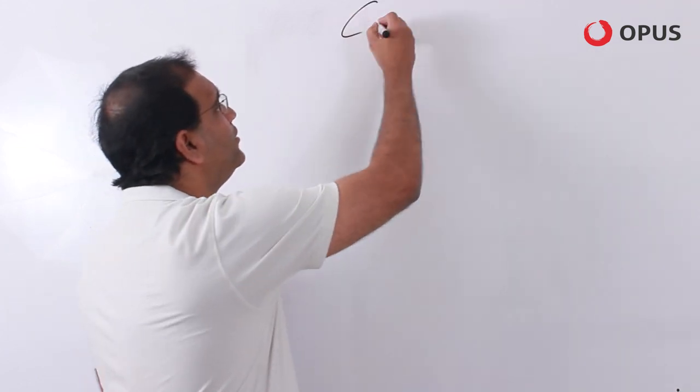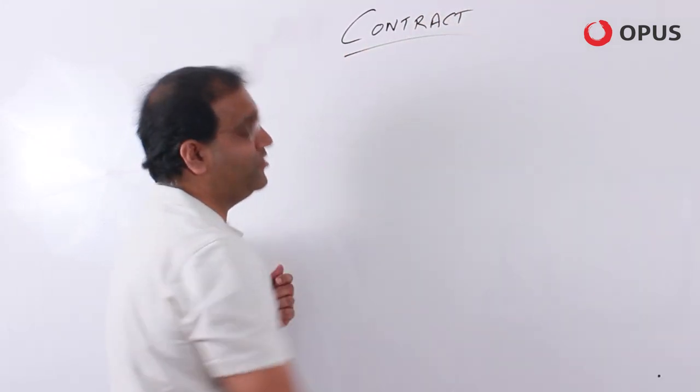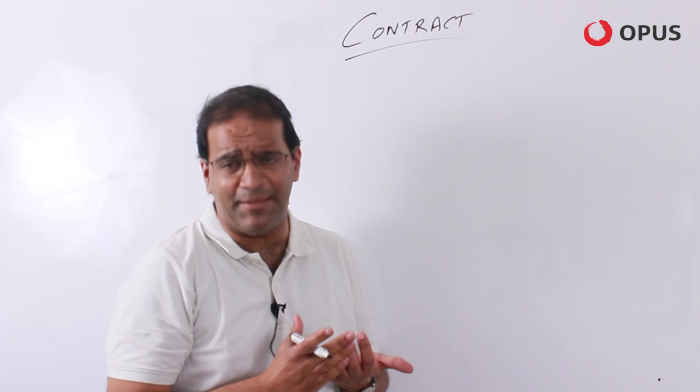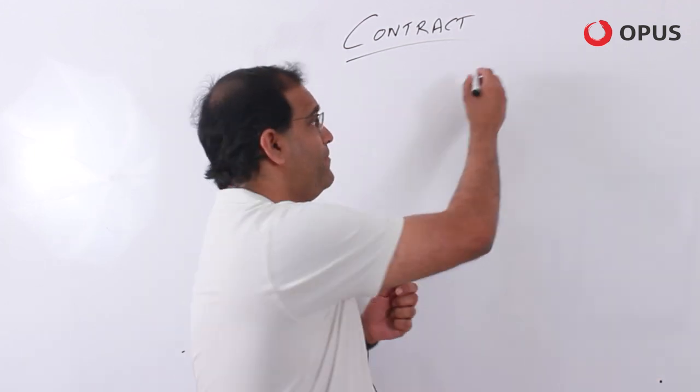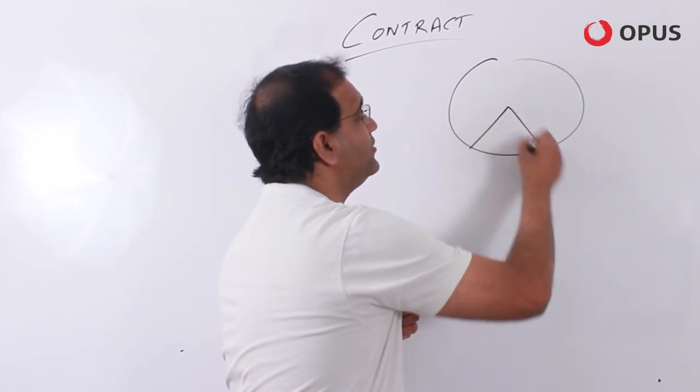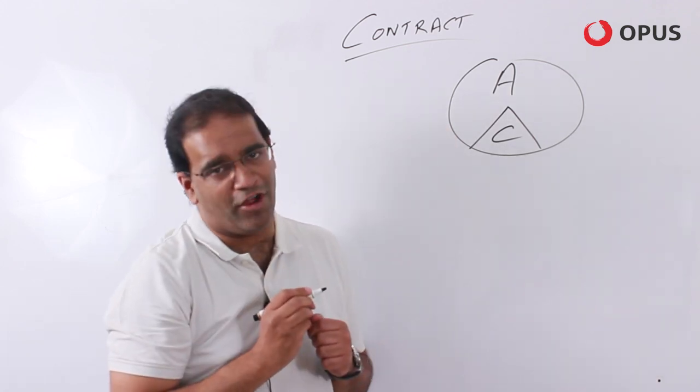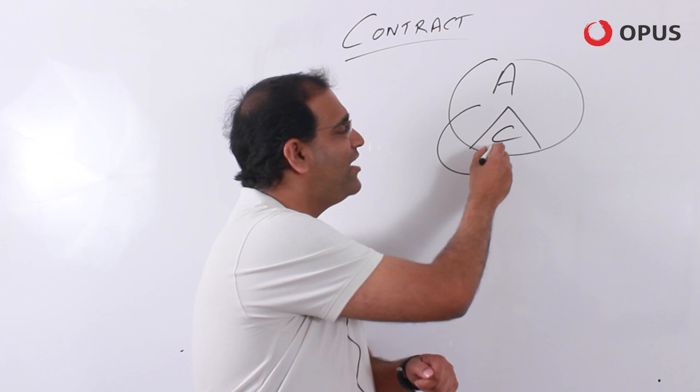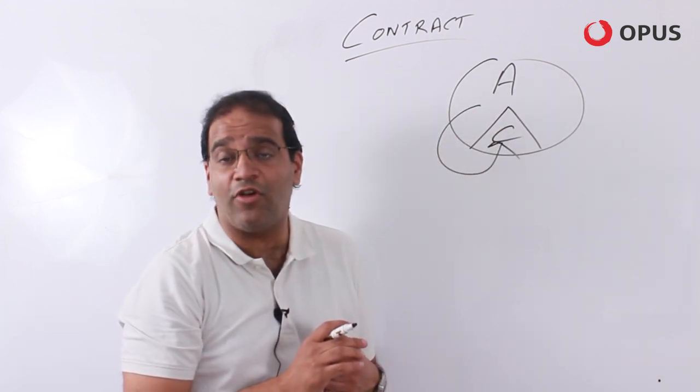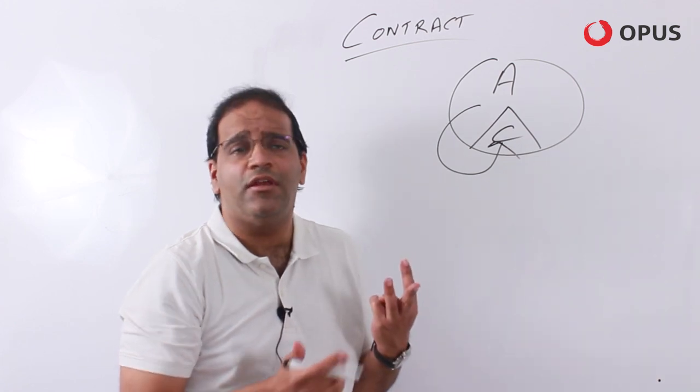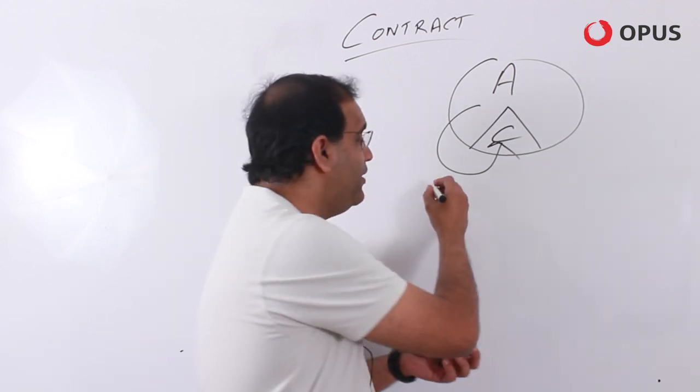So when we hear the word contract, typically we think that it's synonymous with another word called agreement. Contracts and agreements are quite similar, but there are some broad distinctions between the two. We say that all contracts are agreements, but all agreements are not contracts. So only certain agreements are contracts. In fact, for a very simplistic definition of a contract, just four words: it's an agreement enforceable by law.